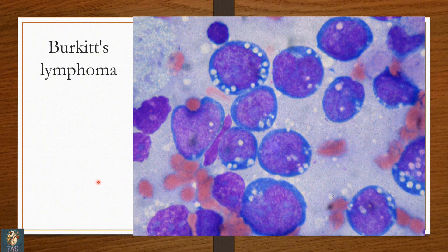This slide is showing you lymphoblasts. These are large-sized lymphoblasts having deeply basophilic cytoplasm plus vacuolation in the cytoplasm. These are the ID points to diagnose Burkitt's lymphoma on a microscopic slide.